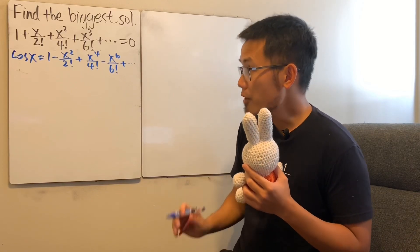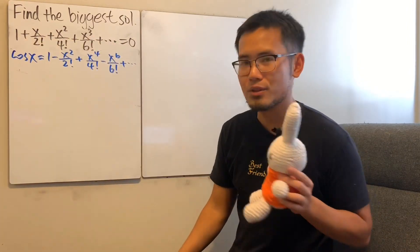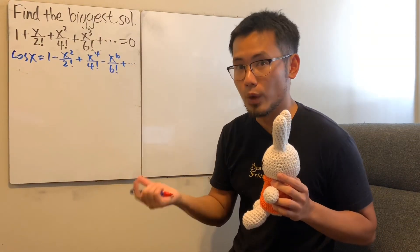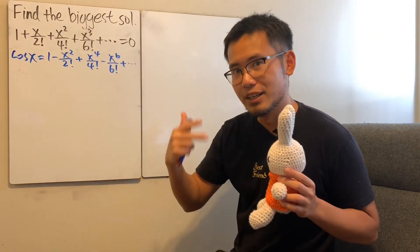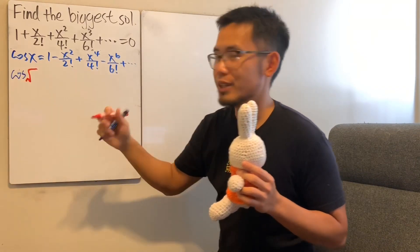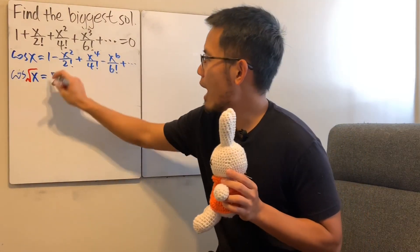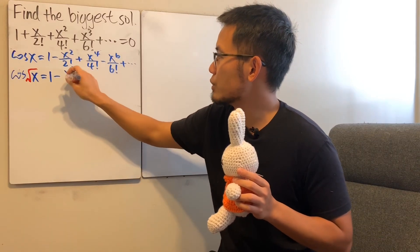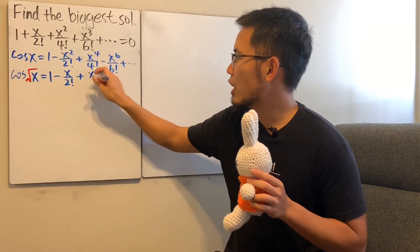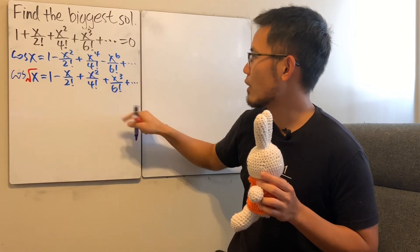However, we want the powers to be 1, 2, 3 — not 2, 4, 6. So what can we do? Well, as long as we can divide the powers by 2, we can achieve that. The way to do this is just look at x as square root of x. When we have cosine of square root of x, this gives us 1 minus x to the 1st power over 2 factorial, plus x squared over 4 factorial, minus x to the 3rd power over 6 factorial, and so on.